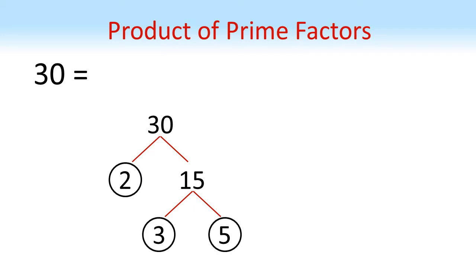So our factor tree has come to an end with the numbers 2, 3 and 5. So 30 is equal to 2 times 3 times 5.